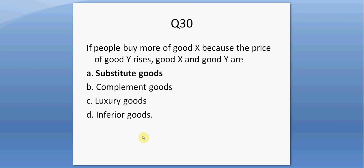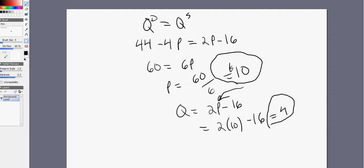Question thirty. If people buy more of good X because the price of good Y rises, good X and good Y are substitute goods. Good X may be Coke, good Y may be Pepsi. So if the price of Pepsi rises, we expect that the demand for Coke will increase and people will buy more Coke. And that is the end — hope you found this helpful. Thank you.